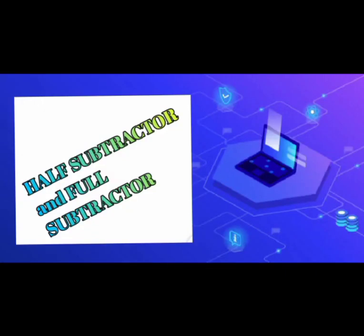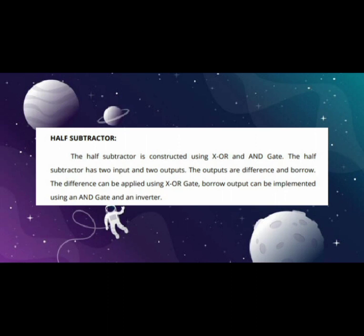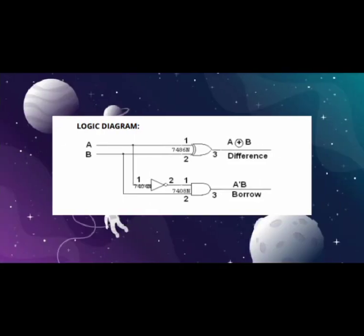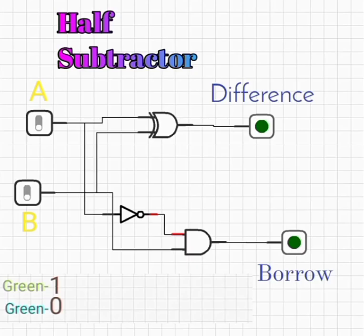Half subtractor and full subtractor. The half subtractor is constructed using XOR and AND gates. The half subtractor has two inputs and two outputs. The outputs are difference and borrow. The difference can be applied using XOR gate. Borrow output can be implemented using an AND gate and inverter.